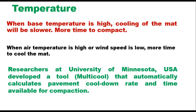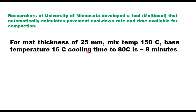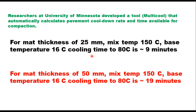Researchers at the University of Minnesota, USA, have developed a tool called Multi-Cool, which automatically calculates pavement cool-down rate and time available for compaction. For a mat thickness of 25 mm, if the mix temperature is 150°C and the base temperature is 16°C, the cooling time to cessation temperature of 80°C will be approximately 9 minutes. But if the mat thickness is 50 mm with the same temperatures, the cooling time to 80°C will be 19 minutes. This illustrates the importance of layer thickness — thicker layers provide a longer time window for compaction.